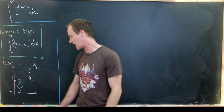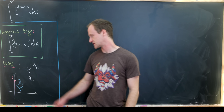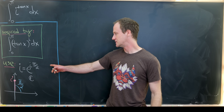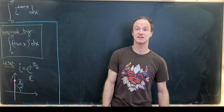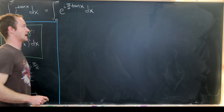The argument of i is π/2, and its distance from the origin is 1, as shown in the diagram. Using this expression for i, we rewrite the integrand as e^(iπ/2) to the power tangent of x, which by exponent rules becomes e^(i π/2 · tan x) dx.